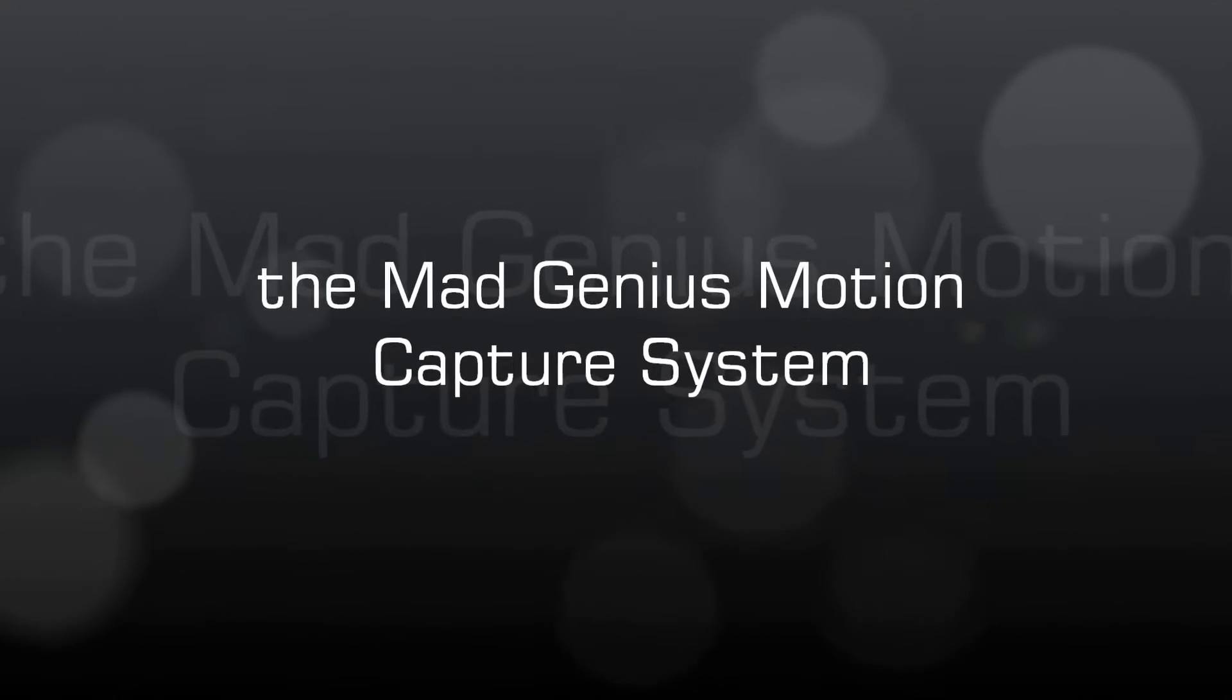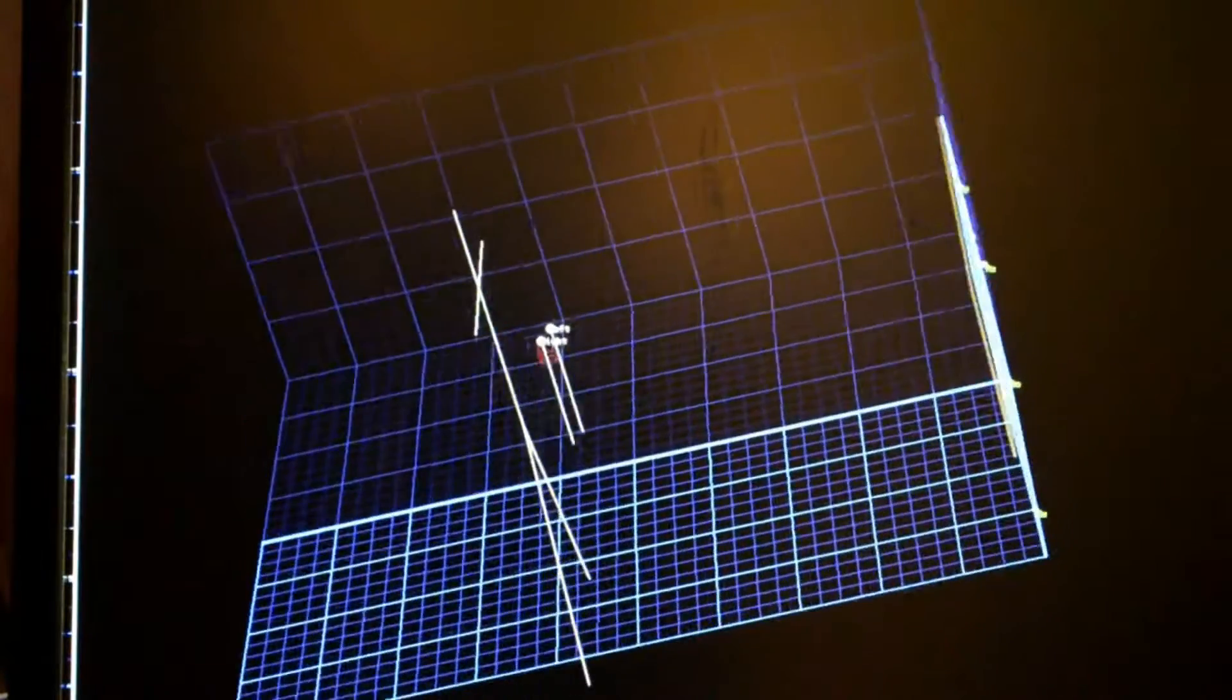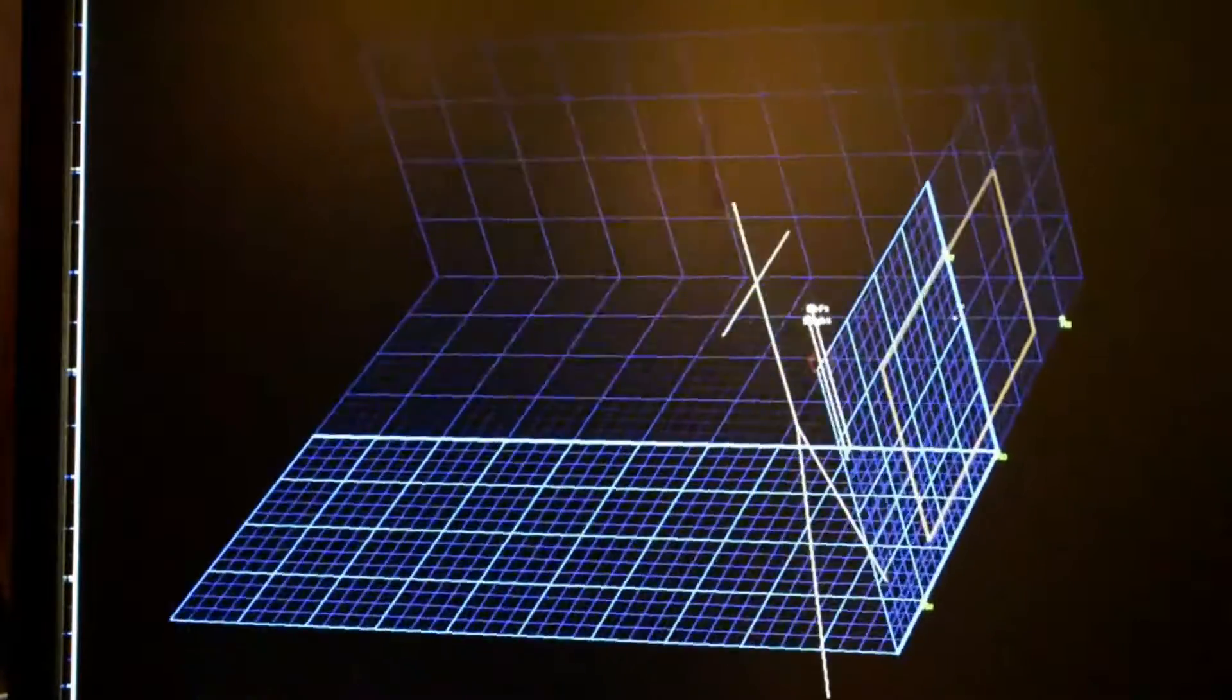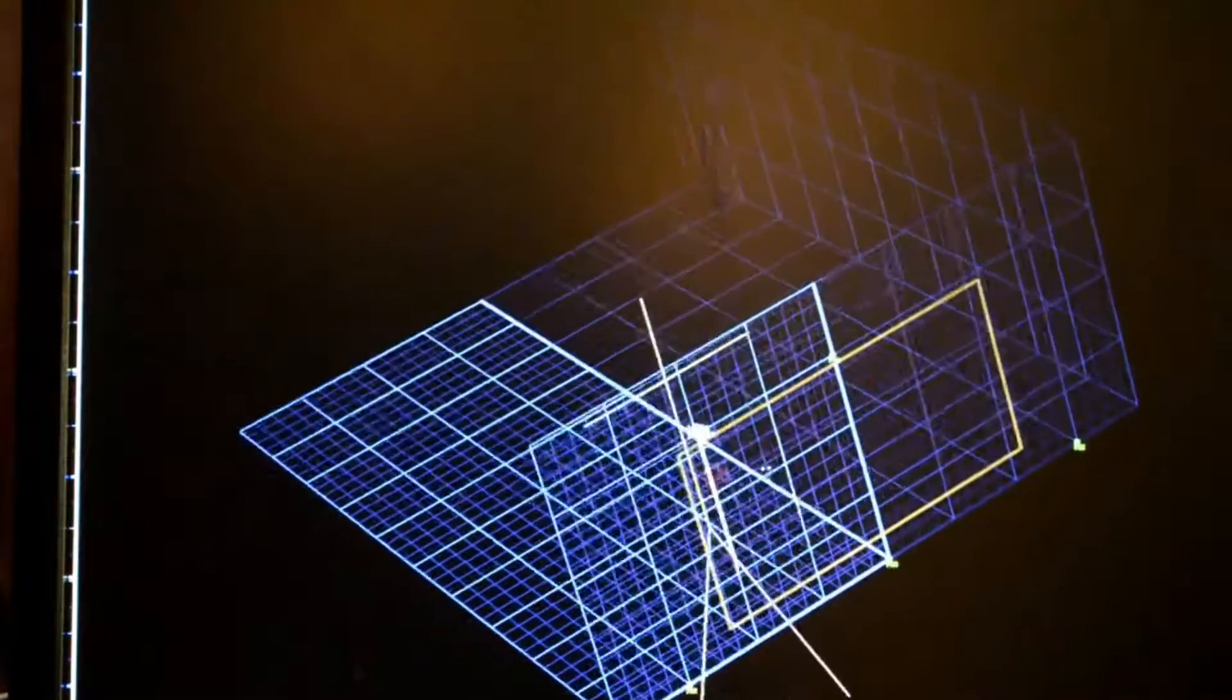In the Skyrim and Halo videos, I talked about how the Mad Genius controller uses an absolute positioning system. This means that the controller measures exactly where you are in the room, and it measures this position with an accuracy of around a hundredth of an inch.